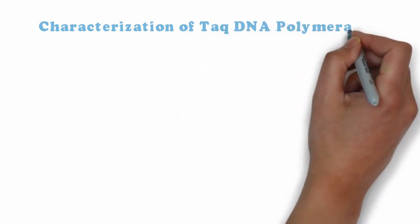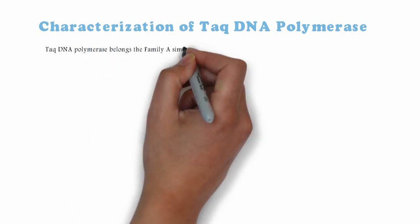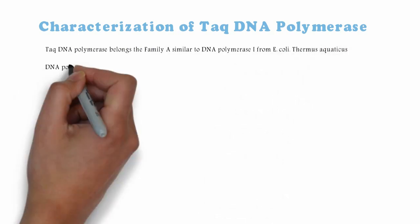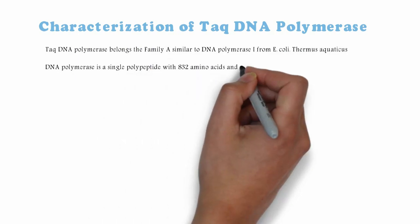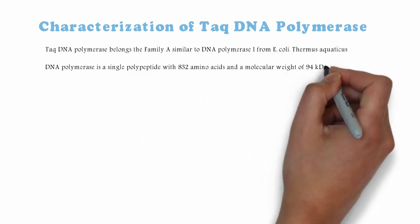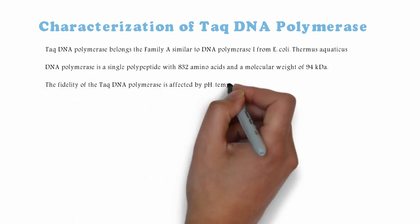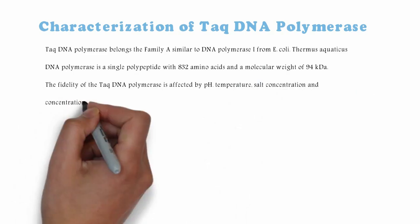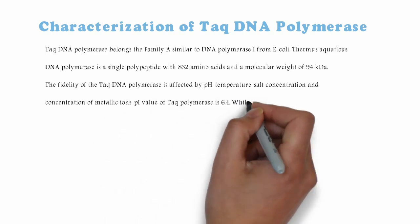Characterization of Taq DNA Polymerase. Taq DNA Polymerase belongs to the same family as DNA Polymerase I from Escherichia coli and Thermus scotoductus. Taq DNA Polymerase is a single polypeptide with 832 amino acids and a molecular weight of 94 kDa. The fidelity of Taq DNA Polymerase is affected by pH, temperature, salt concentration, and concentration of metallic ions. The pI value of Taq polymerase is 6.4.